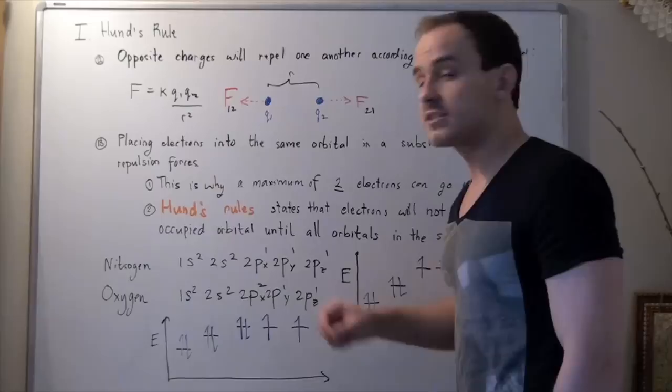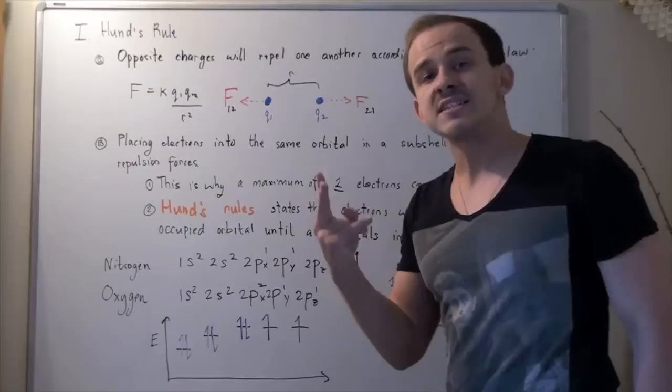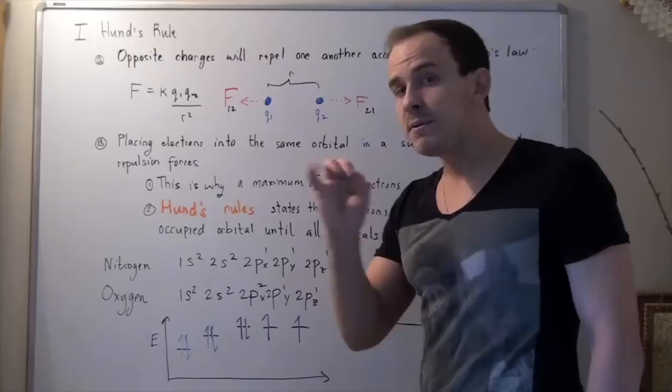Right? So, that's because of the Pauli exclusion principle. Once again, it states a maximum of two electrons will go into any orbital. Next, we begin filling our p orbitals. We have three p orbitals, and now we have four electrons.